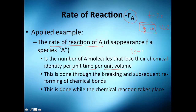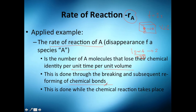How many moles turn from A into B? That will be the rate of reaction. Let's say one gram of A per cubic meter per second — so in one cubic meter you are transforming one gram of A into other things, maybe two grams of B, five grams of C, whatever. This is done through the breaking and subsequent reforming of chemical bonds.